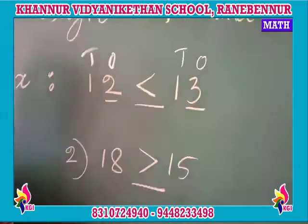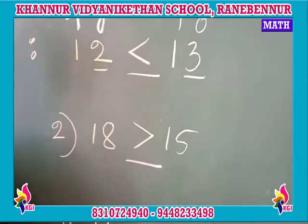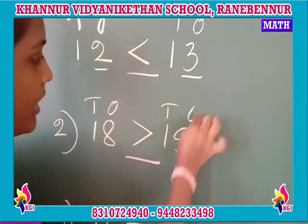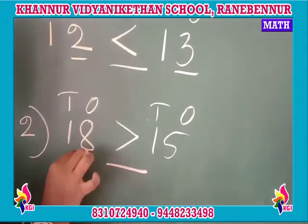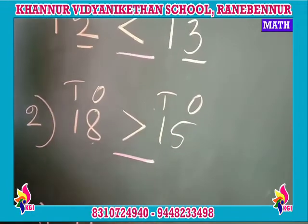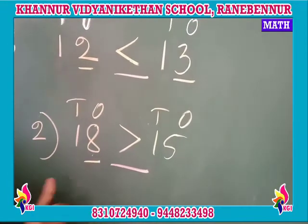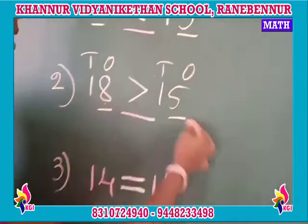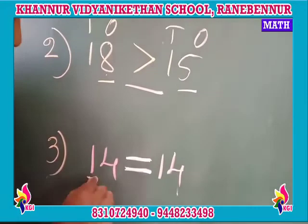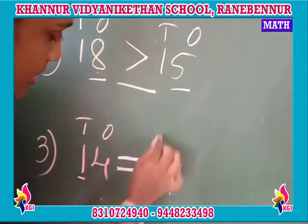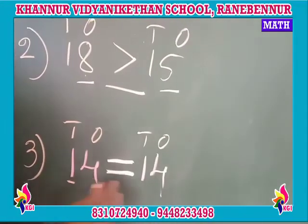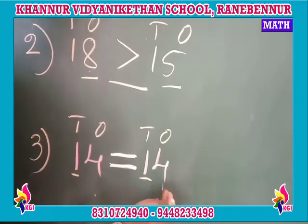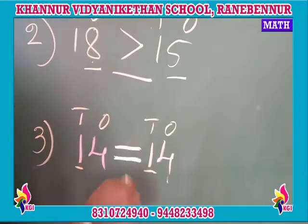Second one: here 18 and 15. In the tens place, one and one is there — same. In the ones place, eight and five is there. Eight is bigger than five. So we consider eight, and 18 is greater than 15. Five is the smaller number. Then for the third example, tens place: one and one — same. Ones place: same numbers are there too. So we use the equal sign.